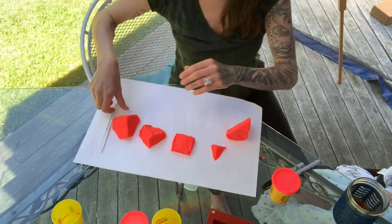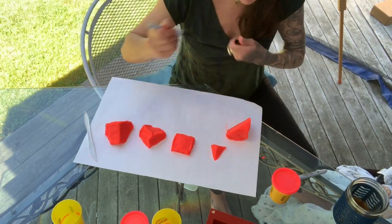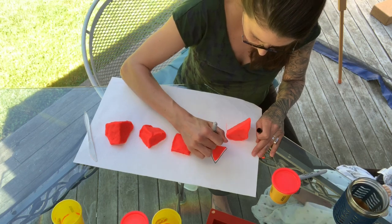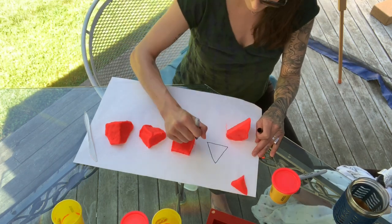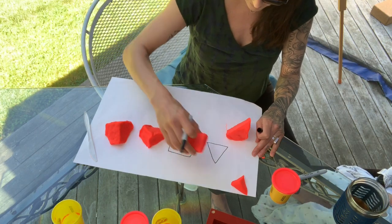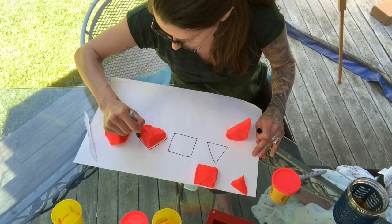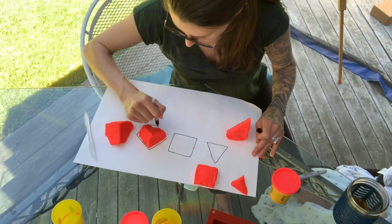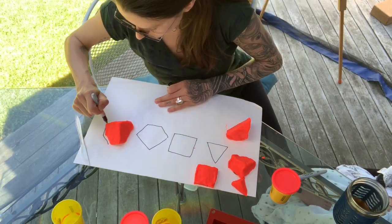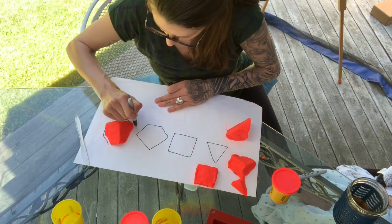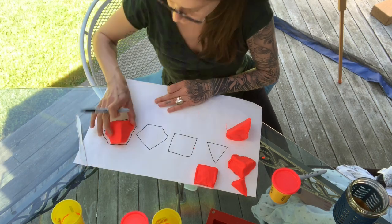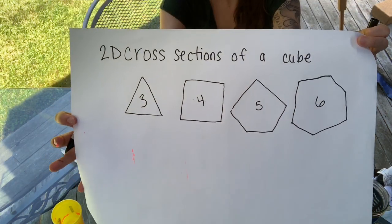Now we can trace these with marker to really be able to see the shapes. Here we have our triangle, the quadrilateral, the pentagon, and the hexagon — the 2D cross sections of a cube.